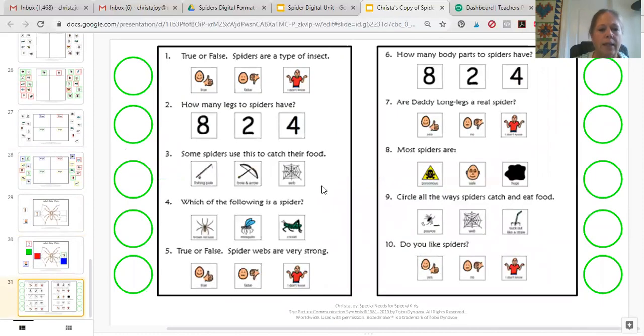Then you get the assessment, and again the assessment piece does not move. They are going to move these circles, so you will read this question to them or they will read it to themselves. True or false, spiders are a type of insect, and they will just move the circle over to the answer that they feel is most correct.